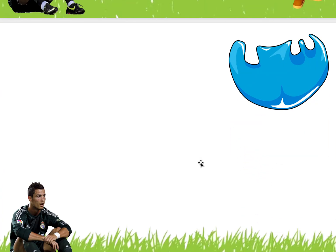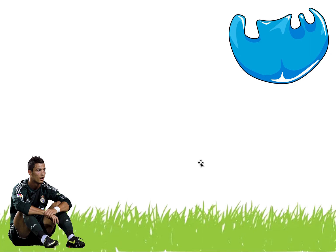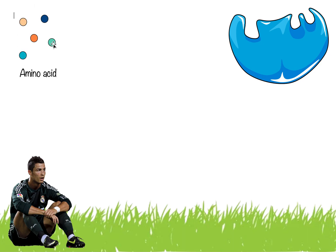Enzymes are absolutely everywhere in your body and regulate almost every single reaction. Without enzymes, you would not be able to exist because reactions would happen so slowly that nothing would actually be formed. Now, what are enzymes made of? An enzyme is a protein. Proteins are made up of amino acids — when your body puts them together, they form a long chain called polypeptides. Interestingly, you also need an enzyme to make this happen, so you actually need an enzyme to make an enzyme.